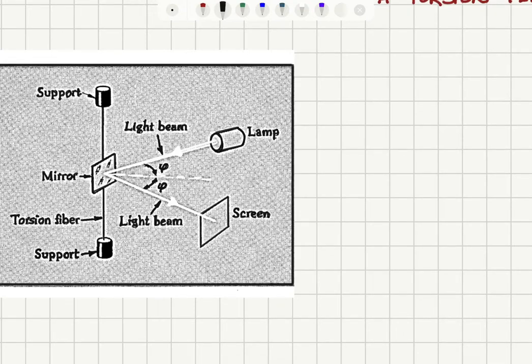We have a lamp that sends a light beam to the mirror which is attached to a torsion fiber, and we see that the reflected light is falling on a screen and we can detect the fluctuations in the angular position of the mirror by looking at our screen.